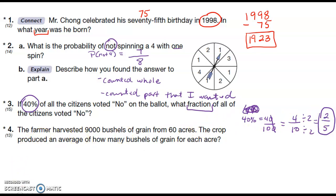The farmer harvested 9,000 bushels of grain from 60 acres. The crop produced an average of how many bushels for each acre? So I want bushels per acre. I have 9,000 bushels and 60 acres. I'm going to go ahead and divide that, and I get 150 bushels per acre.